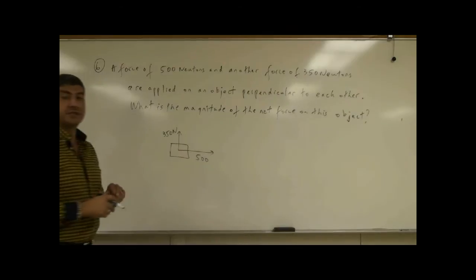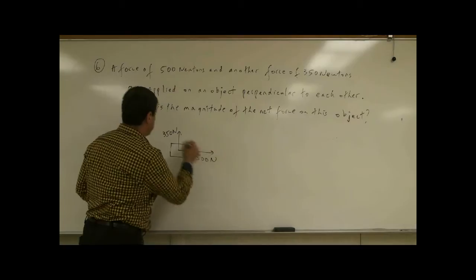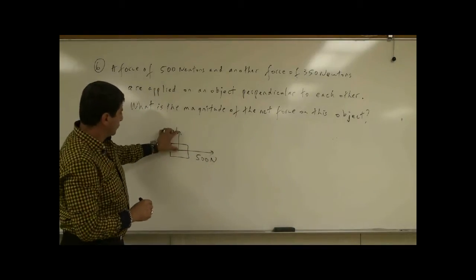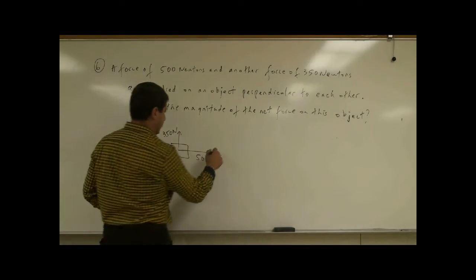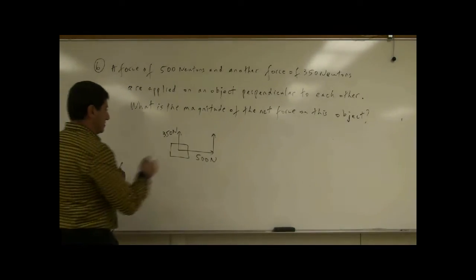So this is an example of a vector addition problem. Somebody exerts a force like this, 500 newtons, 350 newtons, we could put this vector to the tip of that vector. That's going to give us the sum of the two vectors.